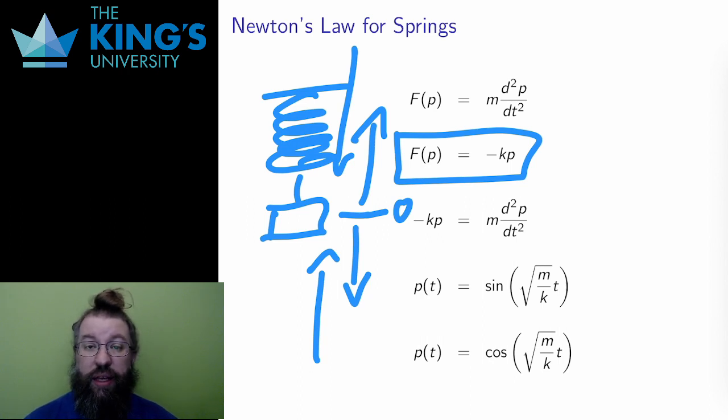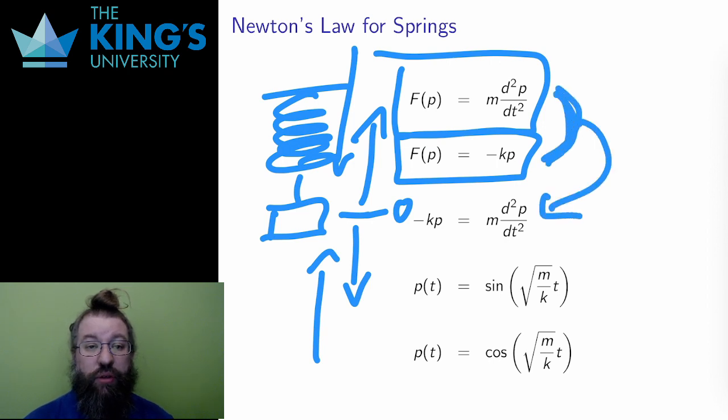So, force is now negative kp. But the force also has to match Newton's law. I can equate these two right-hand sides to get a differential equation. This is the differential equation that describes the movement of a spring, where m is the mass on the spring, and k is a constant that describes the stiffness of the spring.